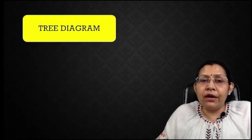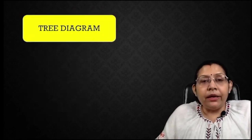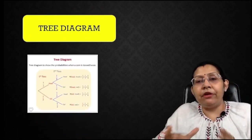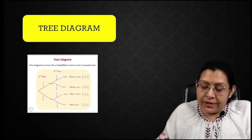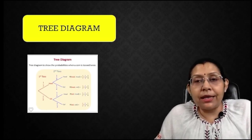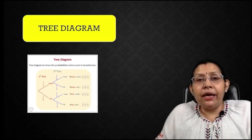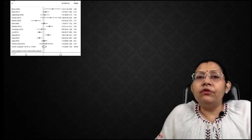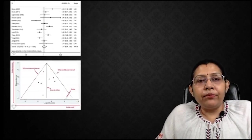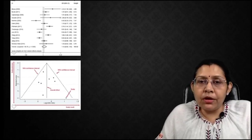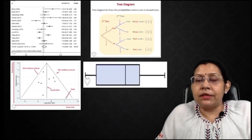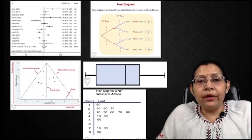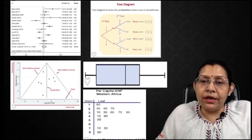We can also have the tree diagram, which looks like a representation of the possibility of occurrence of events. So these are the different graphs commonly asked in examinations: forest plot, funnel plot, tree diagram, box and whisker plot, and stem and leaf plot.